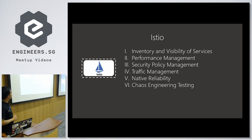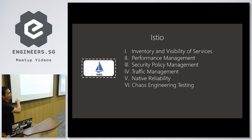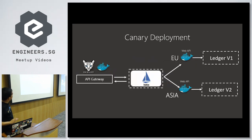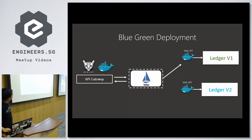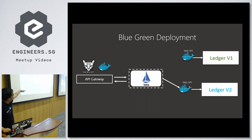Istio can help you do canary deployments — for example, releasing new features for Asian users instead of globally. It also enables blue-green deployments: releasing version 2 of your application without disturbing HTTP traffic, then executing a command to reroute all traffic to ledger version 2.